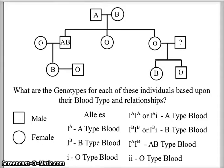We did multiple alleles and we were looking at blood typing as one of those situations. For blood types we have four different blood types: A, B, AB, and O. We have AB because this is a codominant situation where both traits appear simultaneously. The alleles we use are capital I with a superscript A for A type blood, capital I with a superscript B for B type blood, and a lowercase i as the recessive for O type blood.